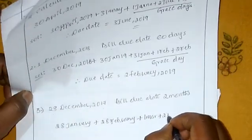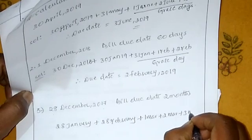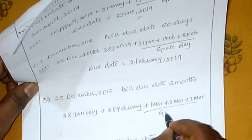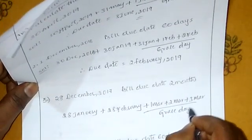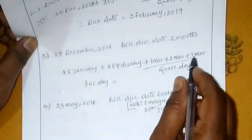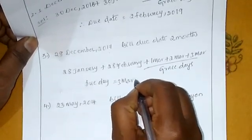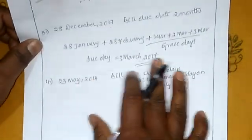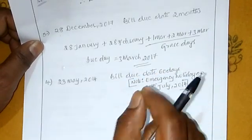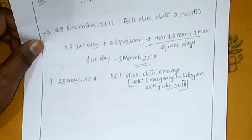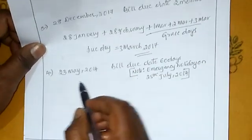So 3 days: 1st March, 2nd March, 3rd March. We add 3 grace days, so the due date is equal to 3rd March 2017. This is how we calculate due dates when months are given. When days are given, we consider the actual number of days.